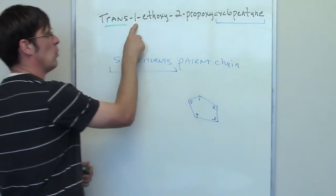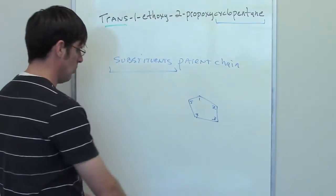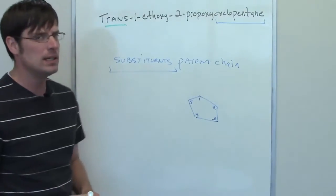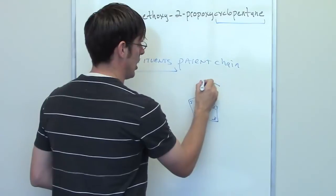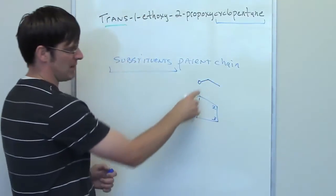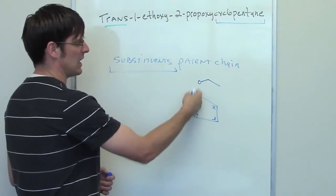So, you can see that at position one on my cyclopentane ring, I have an ethoxy group. What in the world is an ethoxy group? An ethoxy group is an ethyl that is bonded to an oxygen. So, I'm going to have an ethoxy group that is an oxygen stuck to an ethyl group dangling off of carbon one.